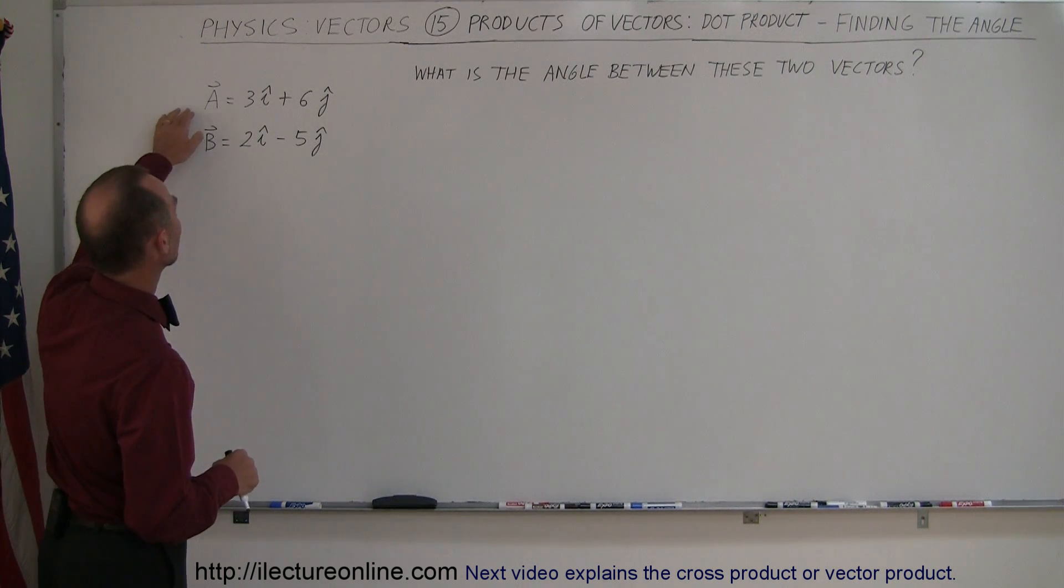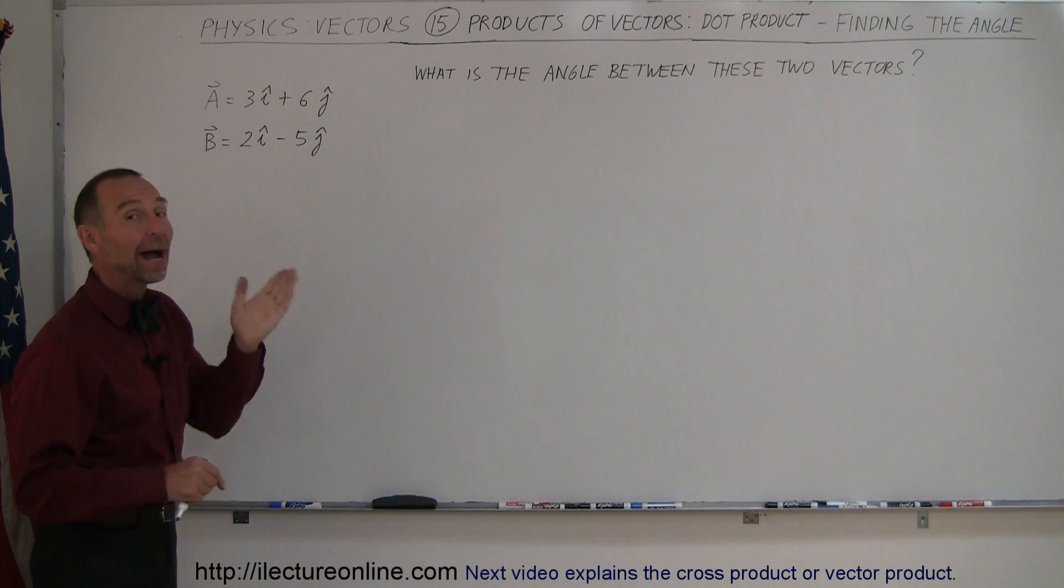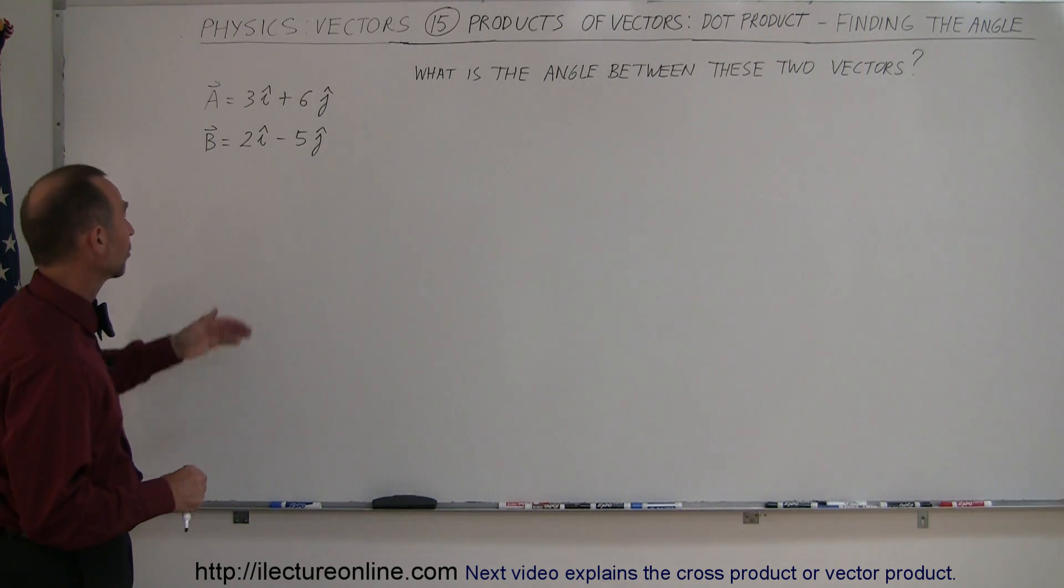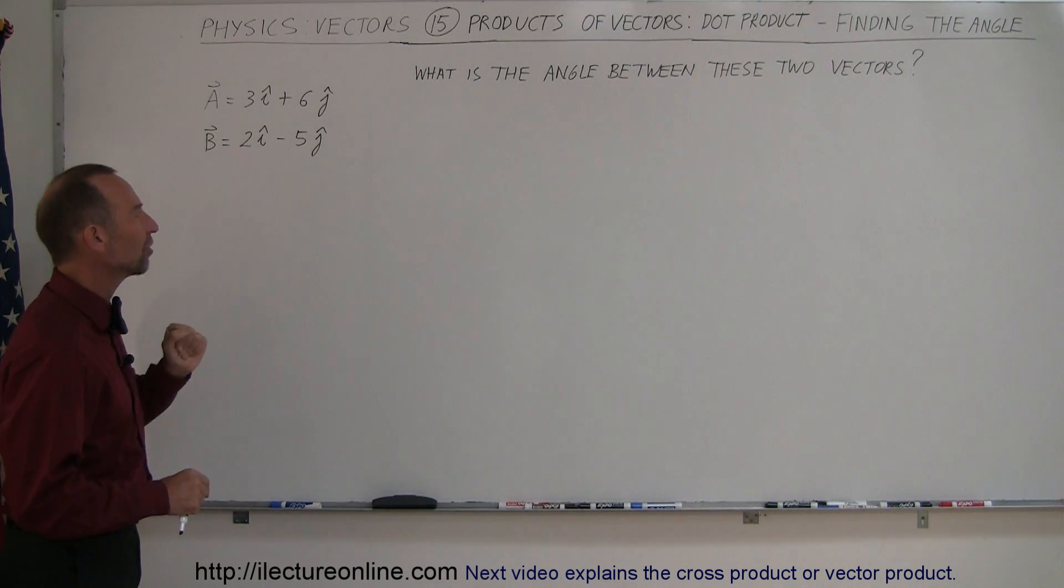We have two vectors here. Vector A is 3i plus 6j. Remember, i is the x-direction, j is the y-direction. Vector B is 2i minus 5j.